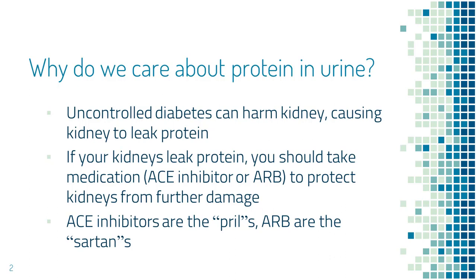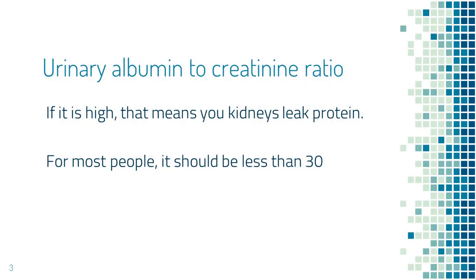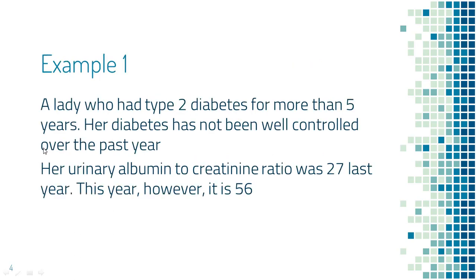Some examples of ARBs are losartan, valsartan, and irbesartan. Their names all end with '-sartan' (S-A-R-T-A-N). We use a marker called the urinary albumin-to-creatinine ratio — the ratio between albumin and creatinine in urine. Albumin is a type of protein commonly leaked from kidneys. Creatinine tells us the amount of urine, which we need to account for when deciding whether there is too much albumin — that's why creatinine comes into play. For most people, this marker should be less than 30. If it is high, it means your kidneys are leaking protein.